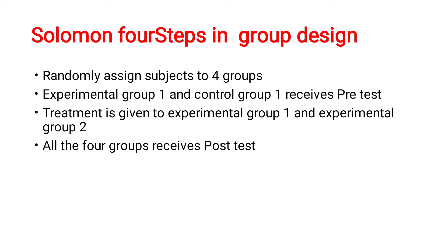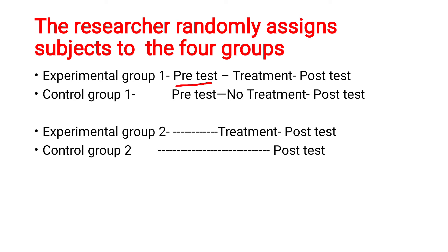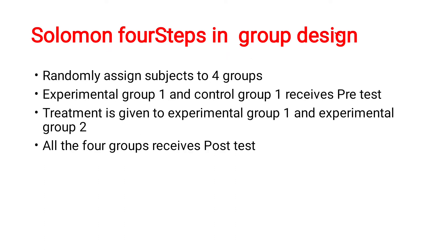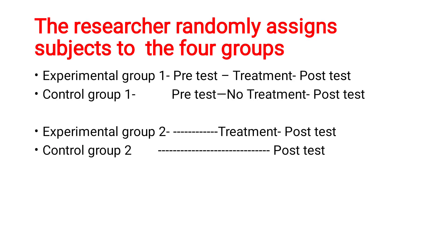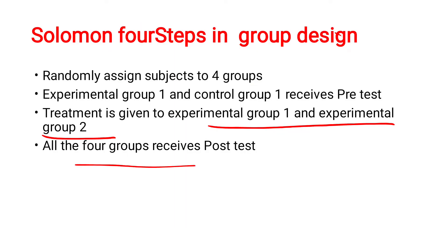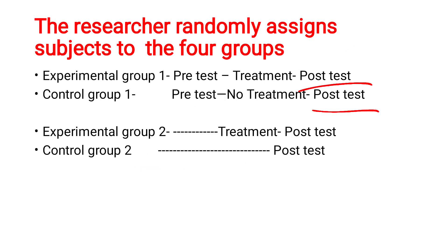The 4 steps in Solomon 4 Group Design are: first, randomly assign the subjects to the 4 groups. Second, Experimental Group 1 and Control Group 1 receive the pre-test. Third, treatment is given to Experimental Group 1 and Experimental Group 2. Fourth, the post-test is done for all 4 groups — Experimental Group 1, Experimental Group 2, Control Group 1, and Control Group 2.